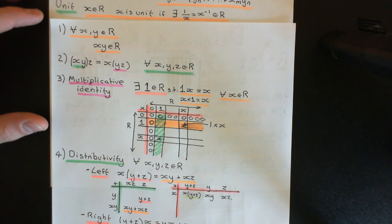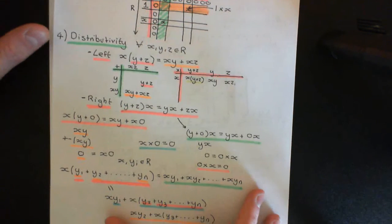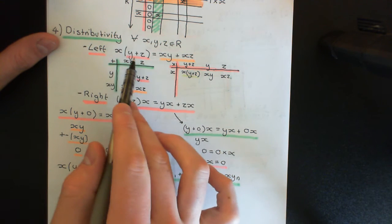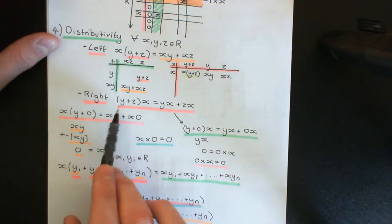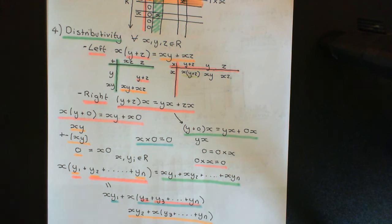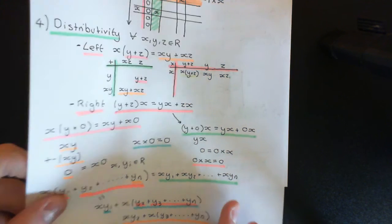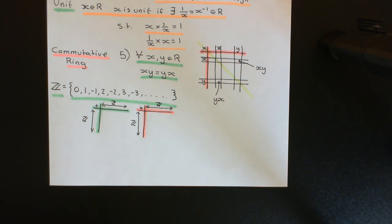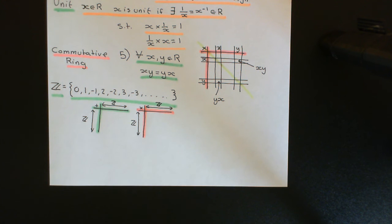Multiplication does obey associativity — it really does not matter where you put the brackets; if you multiply three things together, it has one and only one answer. We do have a multiplicative identity, which is one: one will multiply with any other integer to give that other integer back, either way around. Distributivity is true: working in the integers, left and right distributivity hold — from your knowledge of classical algebra you should know these are true when multiplying and adding integers. And finally, it does obey commutativity: when you multiply two integers together, it doesn't matter which way around you do it. Now, that was not a formal proof — I am not going to go through the formal construction of the integers from Peano's axioms — but the integers are an example of a commutative ring; they are the prototypical example of a commutative ring.